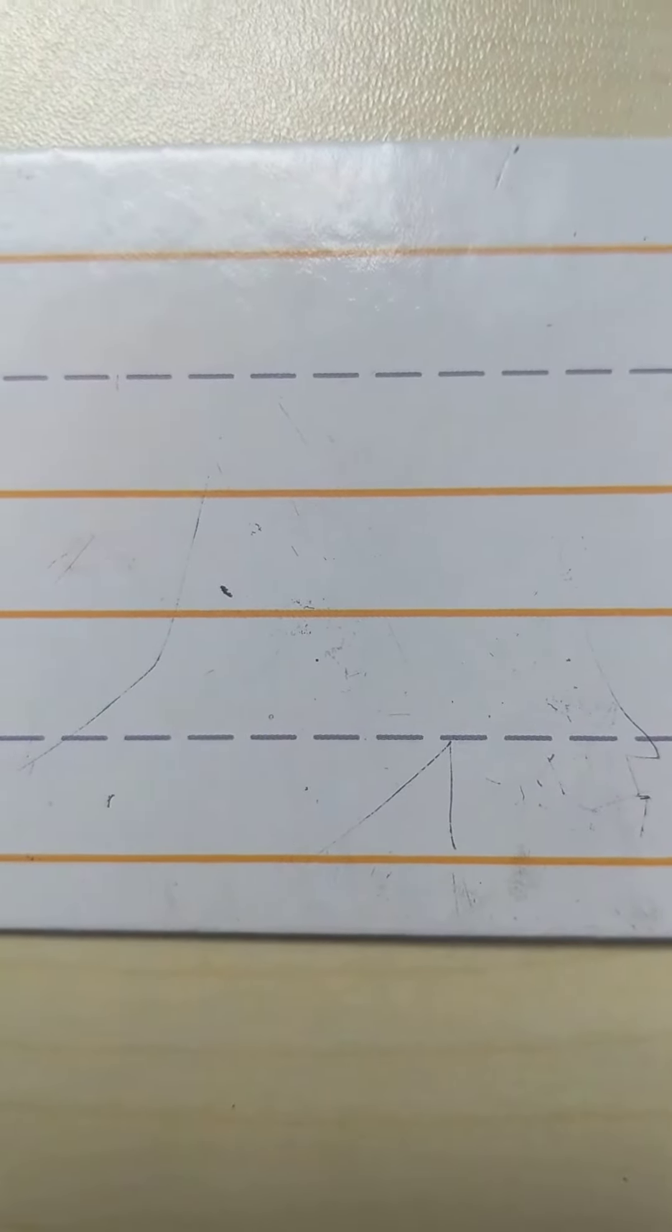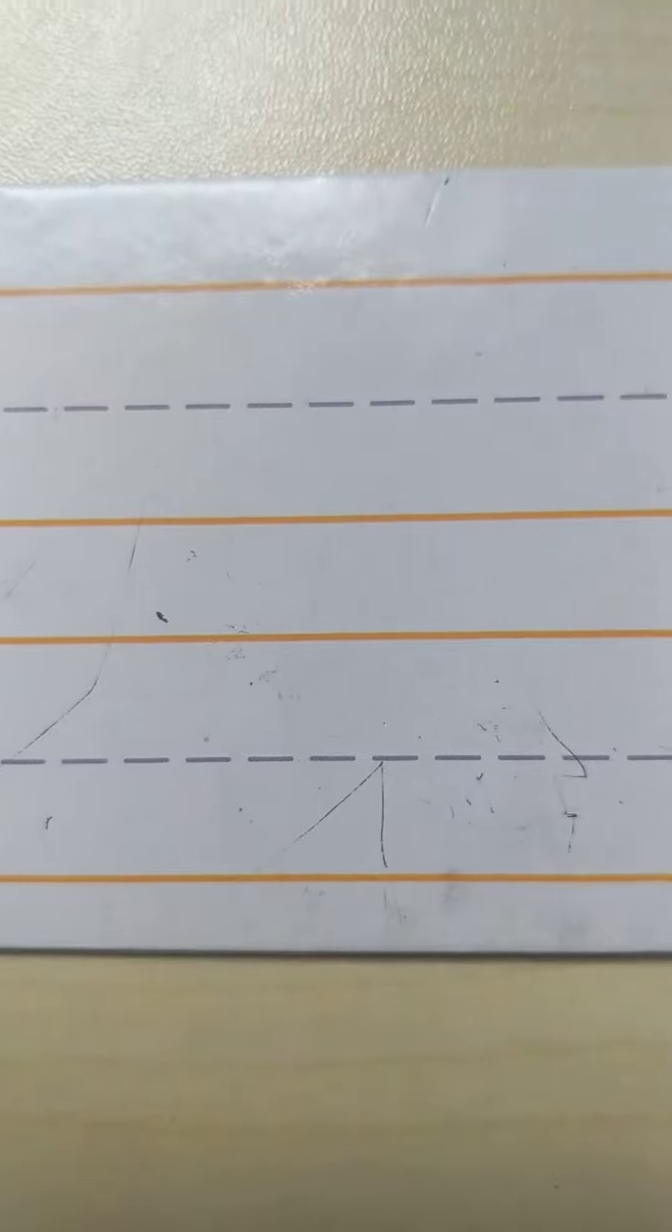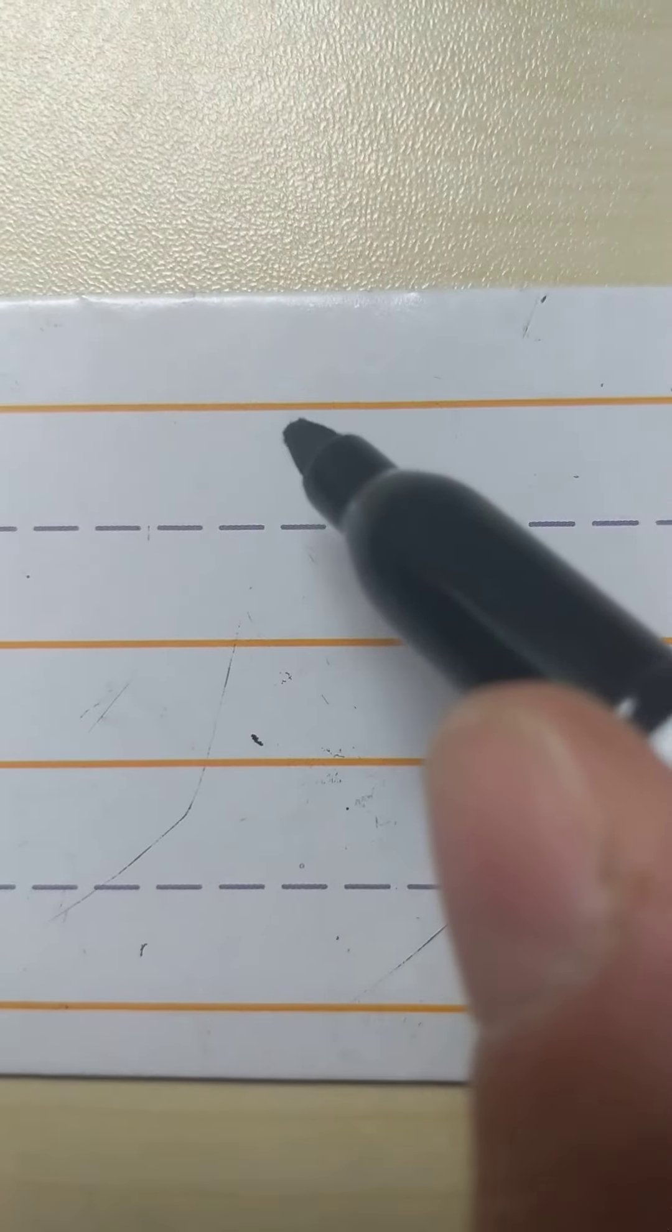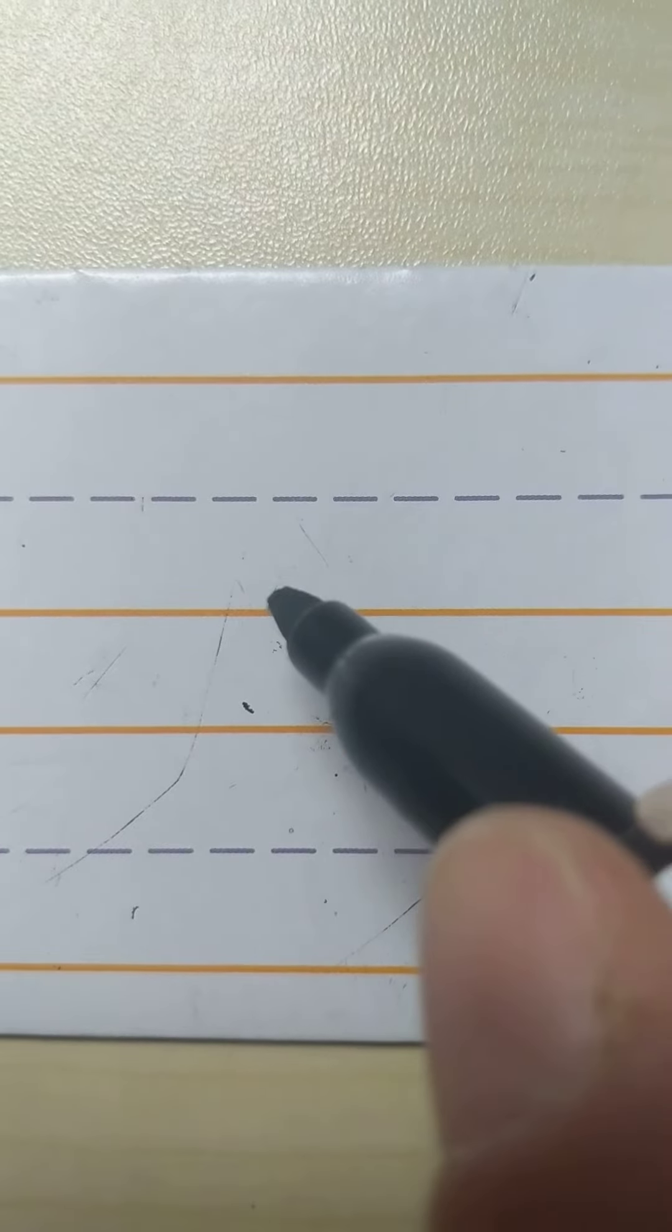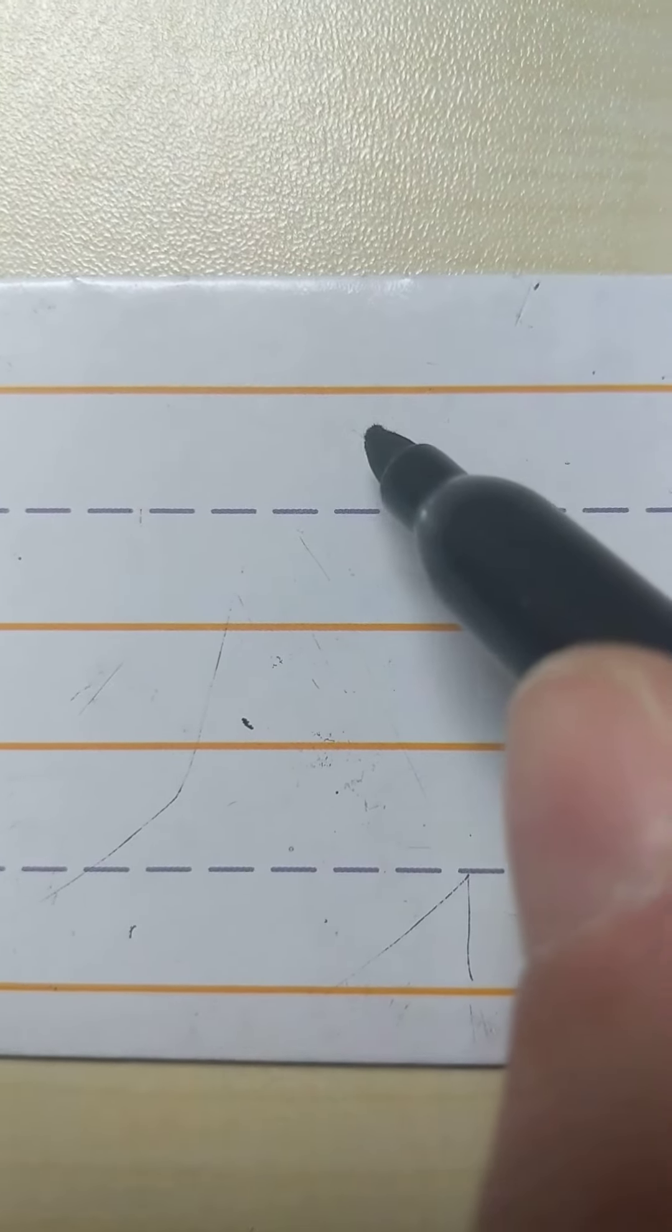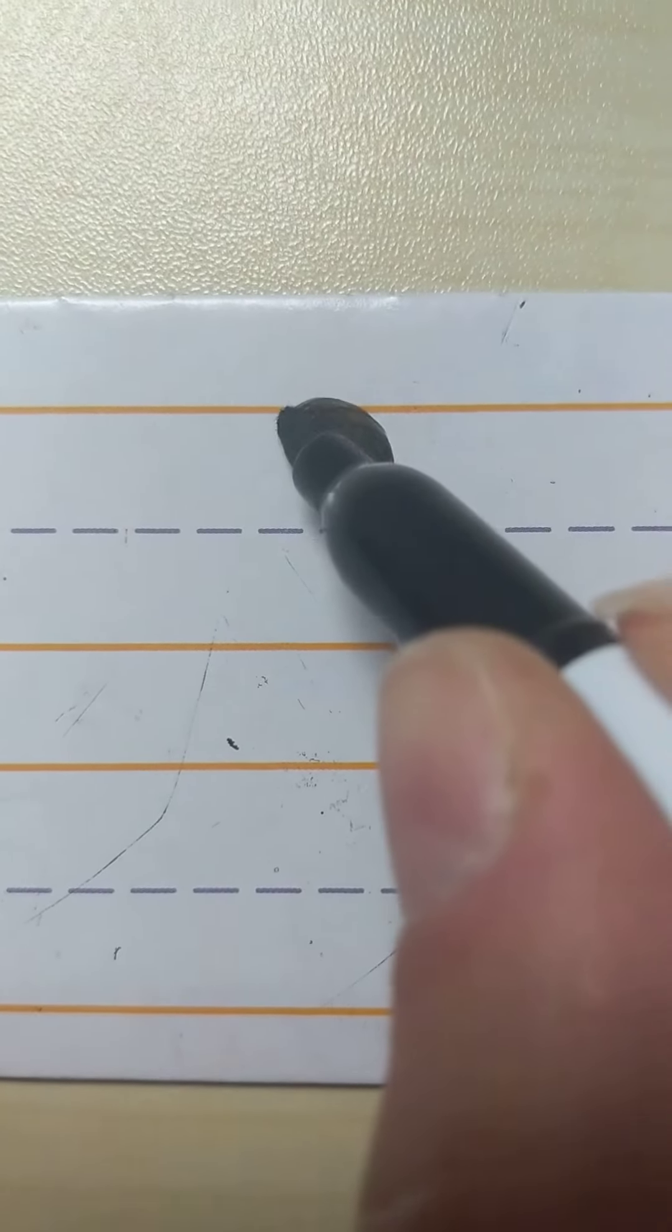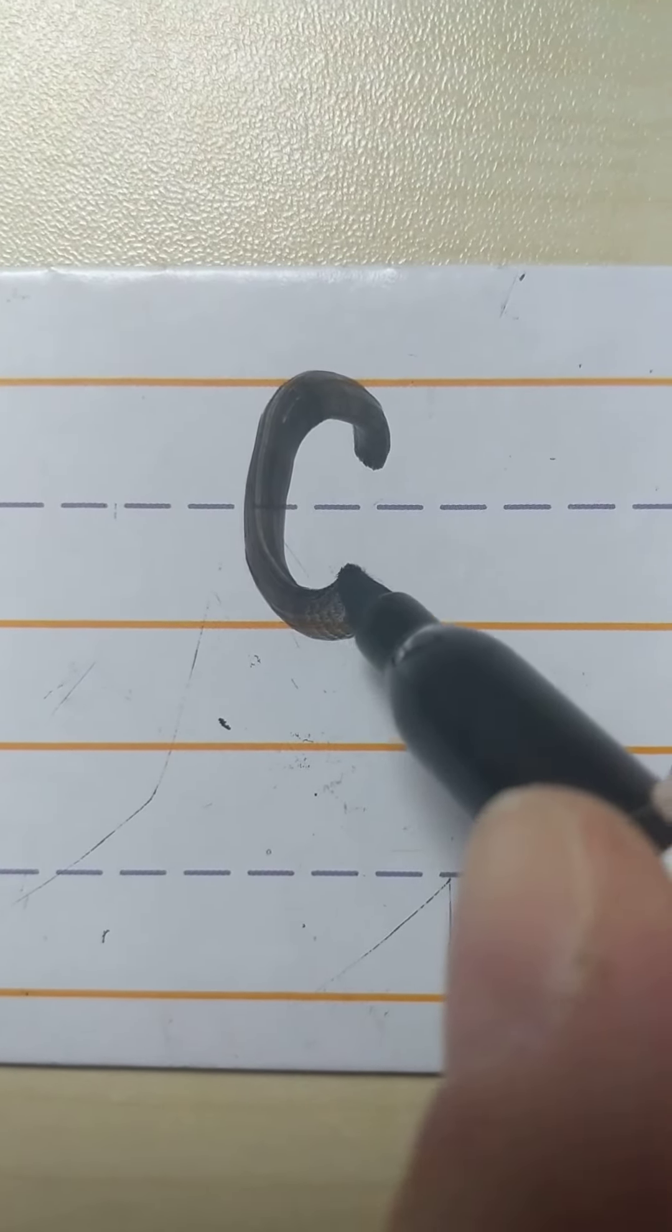Connor, we are going to learn how to write your first name today. So we're going to start with our capital C. Remember capital letters all touch the top and the bottom handwriting line. So to make your C, make that nice curved C shape to touch the top and the bottom.